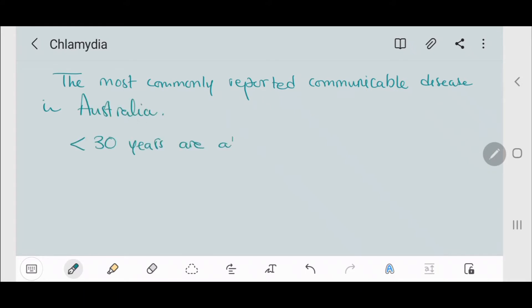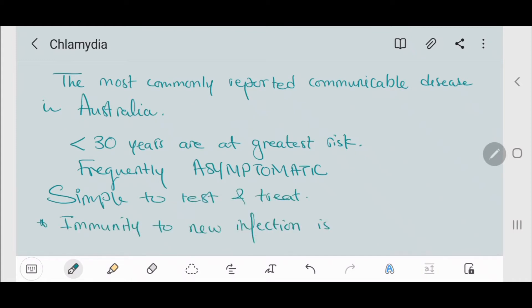Those under 30 years are at greatest risk. It is frequently asymptomatic. It is always simple to test and treat. However, immunity to new infection is not provided by previous infection.